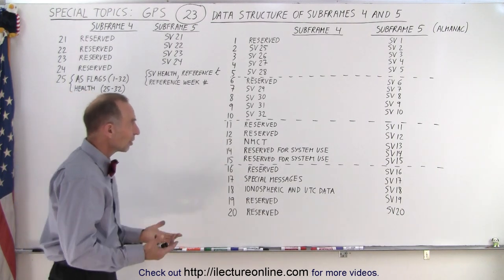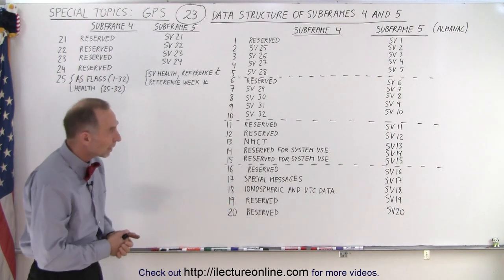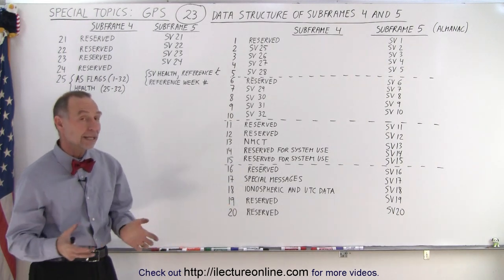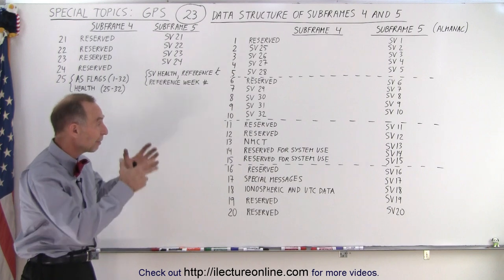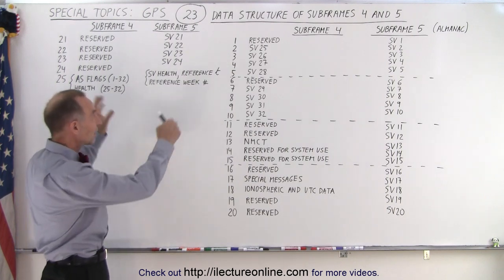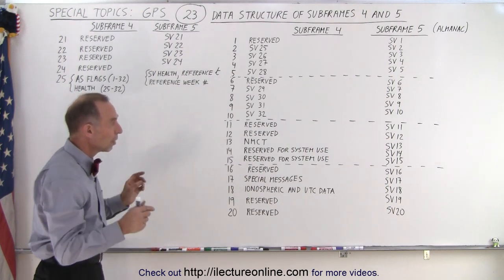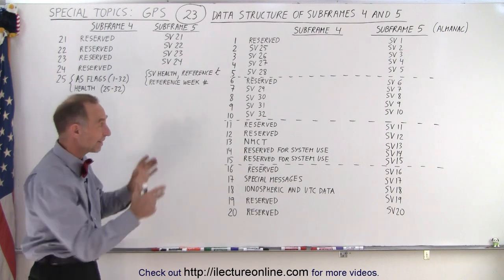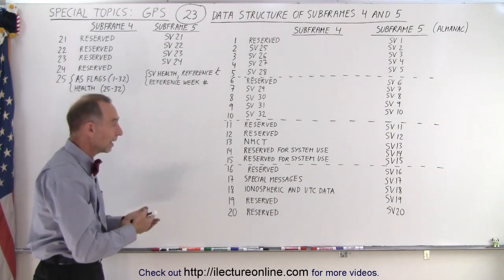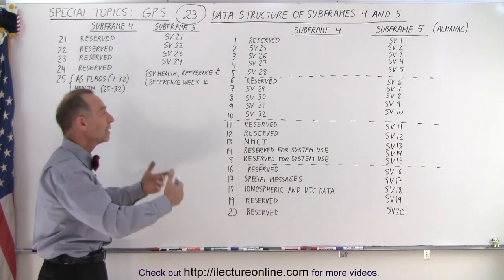So that's the general layout of the data containing those subframes four and five for a set of 25. So this then gets transmitted from every satellite will transmit the same data every 12 and a half minutes and then repeat and do it again.